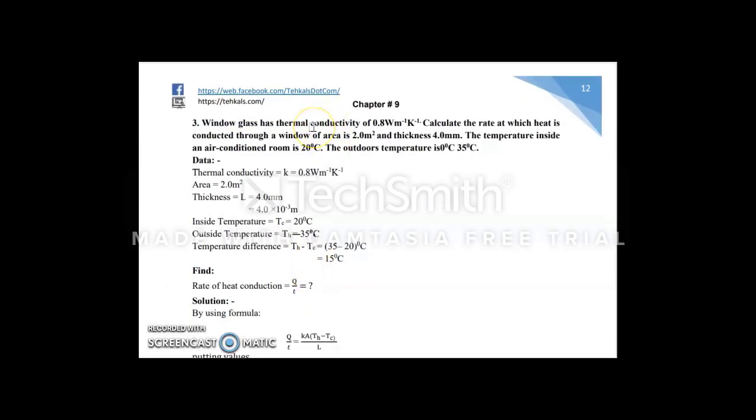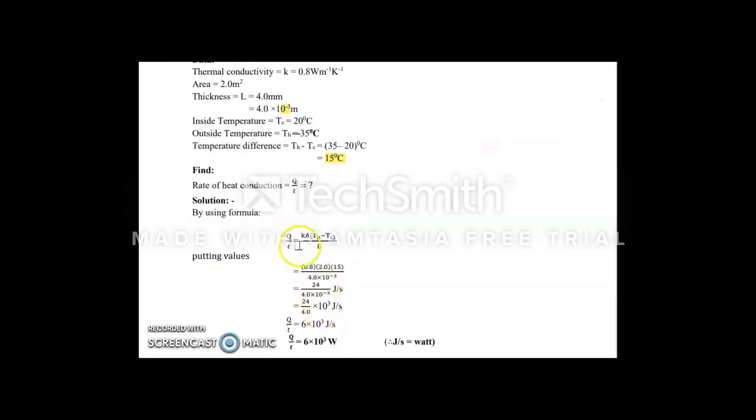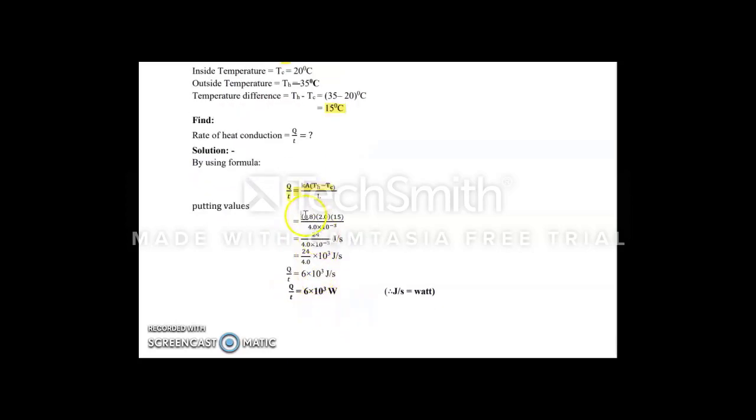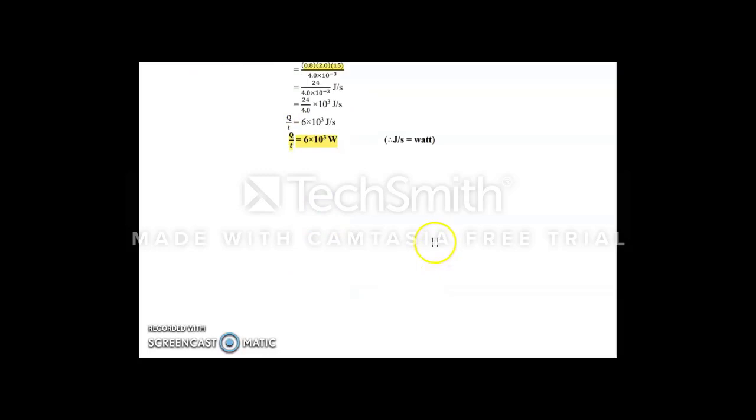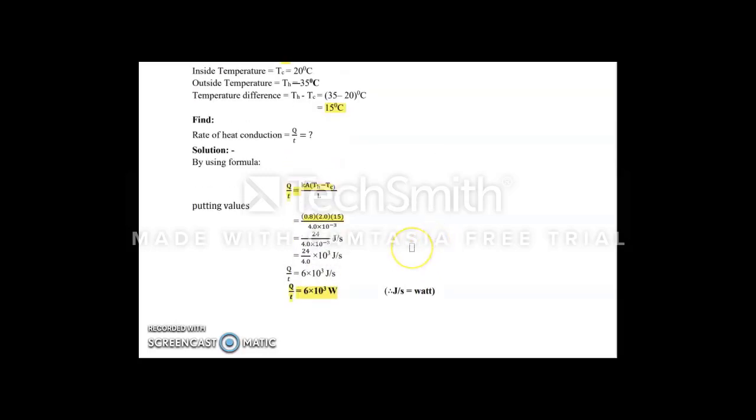Moving towards the third numerical. We are given conductivity of window glass: 0.8. Area is 2 meter square, and the thickness is 4 millimeters. Remember, 1 millimeter. Air conditioner room is 20 degrees centigrade, and outside temperature is 35 degrees centigrade. When we write data first, we have to find the difference of temperature, that is 15 degrees centigrade. Same formula.